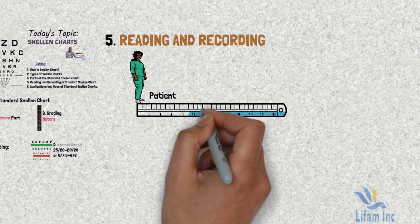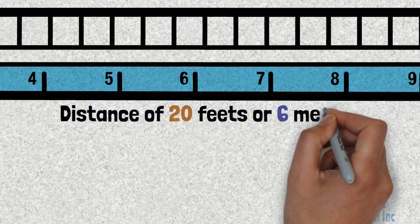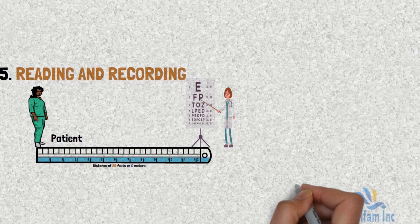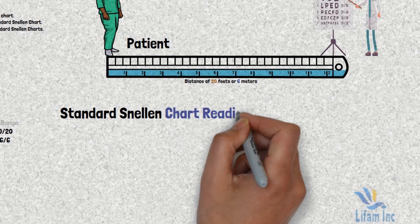For reading and recording: the patient stands at a distance of 6 meters or 20 feet, facing the chart. The patient covers one eye and reads aloud while standing at the front of the chart.